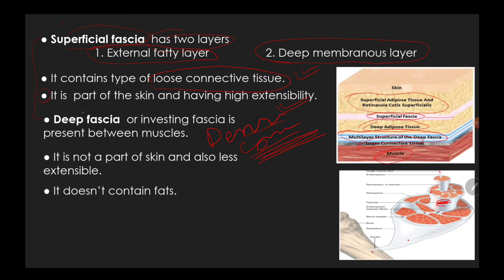The second difference is that superficial fascia is part of the skin, while deep fascia is not. Superficial fascia has high extensibility — a high stretching property — while deep fascia has less extensibility. Deep fascia does not contain fat, while superficial fascia contains fat.